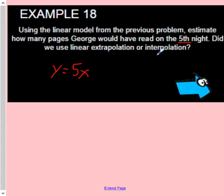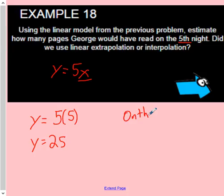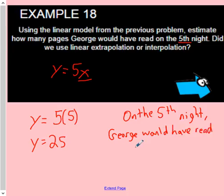So on the fifth night, our input value is going to be 5. We want to substitute in 5 for x. 5 times 5 is 25, which means on the fifth night, George would have read 25 pages.